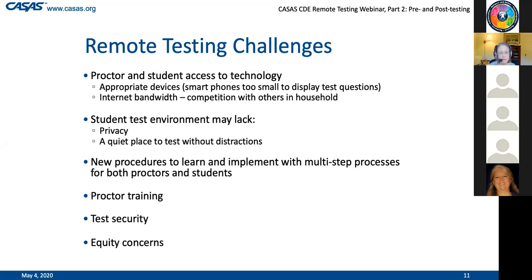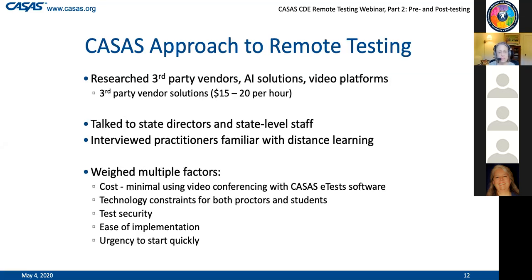Equity concerns have already been mentioned in terms of technology, but there may be others. As we researched all of this, we looked at some third-party vendors. There are lots of them out there - we met with many. What we found is they're expensive - a little steep for adult ed budgets at $15 to $20 an hour for a live proctor. So that's not what we went to first. We may reach out to them to possibly work out an affordable deal at some point, but at this time we are not offering a third-party vendor solution or an artificial intelligence solution.